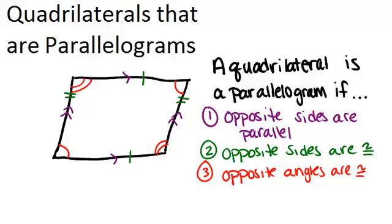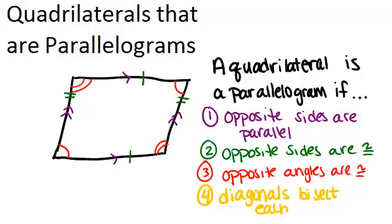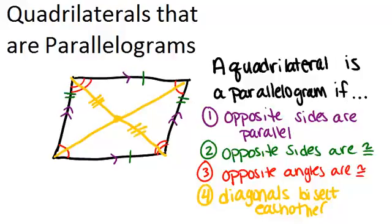The fourth way to tell whether or not a quadrilateral is a parallelogram is if the diagonals bisect each other. So if you know nothing about the sides or the angles, but you do know that the diagonals bisect each other, then that quadrilateral is a parallelogram. The way you'd know that is either if the midpoint of each diagonal is the same point, or if it's shown that we have these congruent segments, meaning the diagonals have cut each other in half.